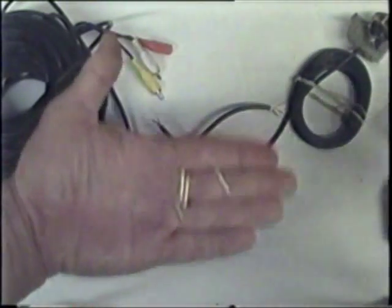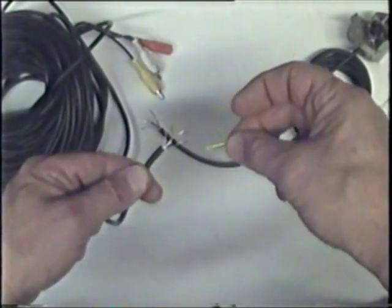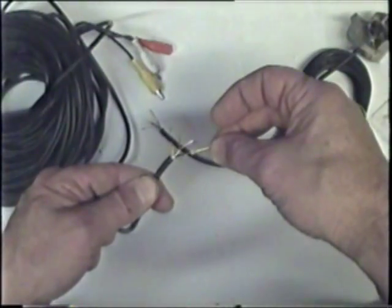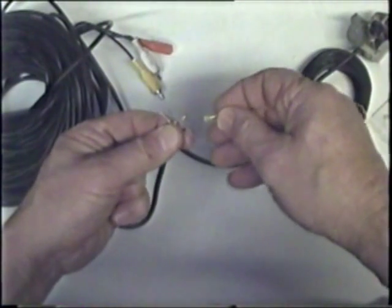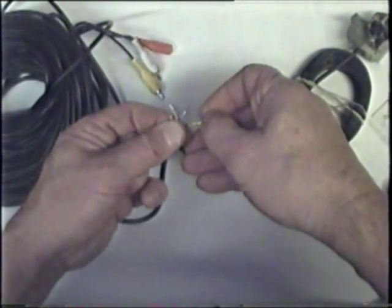So, you take one of the butt connectors, put it on the wire. If it doesn't fit, be sure to twist the wire so it's nice and straight, slip it on.